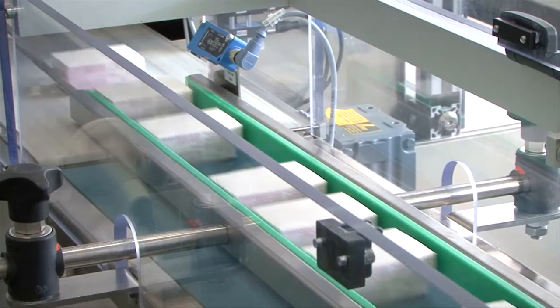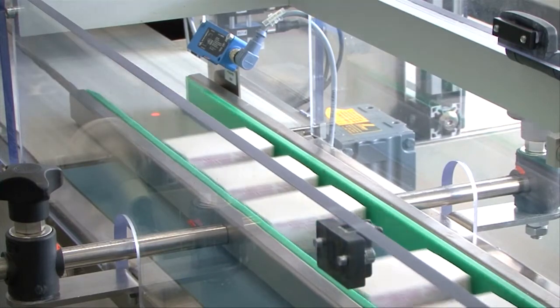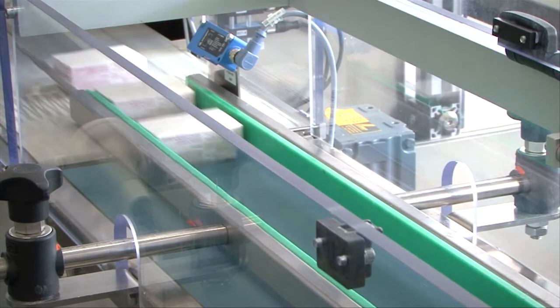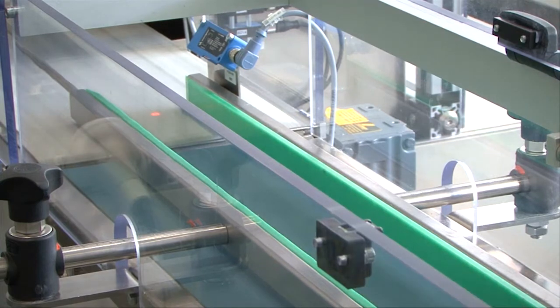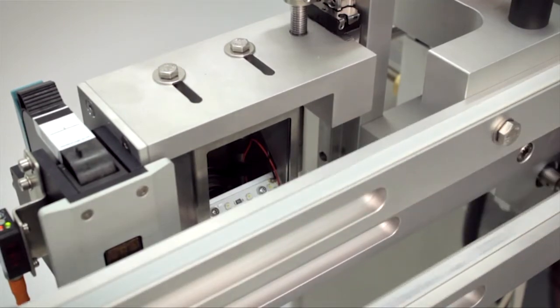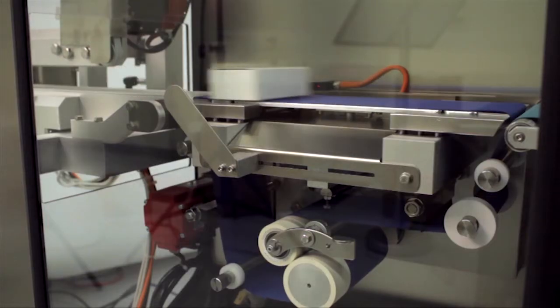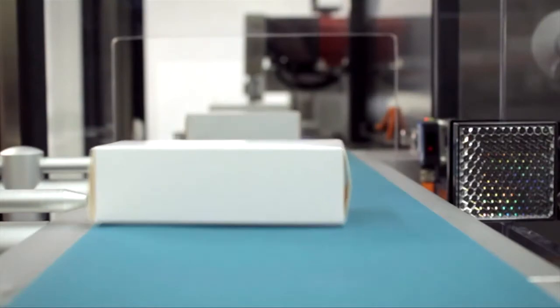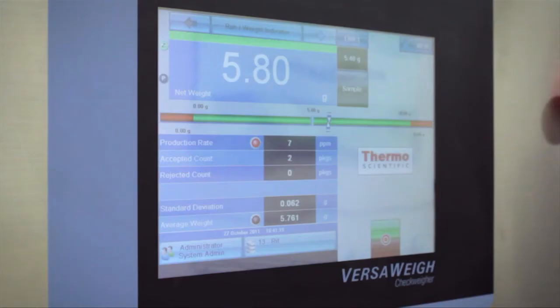Marking and verification for track and trace applications can be applied via a standalone station, but that means additional equipment taking up space in a plant's product line. By having the marking and verification station mounted on a checkweigher, critical space is freed up in the product line. This avoids the need for line splitting and reduces costs of purchasing an additional standalone marking and verification system.